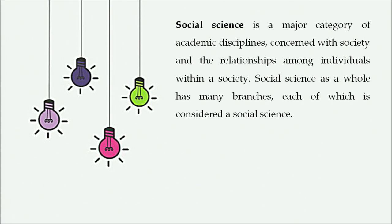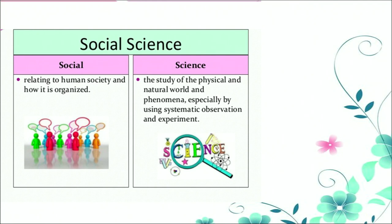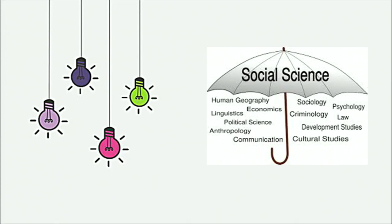Social science as a whole has many branches, each of which is considered a social science. The term 'social science' is derived from 'social' and 'science' — social means relating to human society and how it is organized, and science refers to the study of the physical and natural world using systematic observation and experiment. Thus social science is an umbrella term which includes geography, economics, linguistics, political science, anthropology, communication, sociology, and psychology.